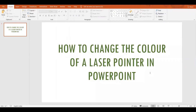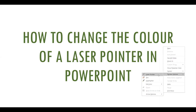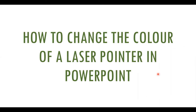Hello everyone. In one of our previous videos, we showed how you can simply operate a laser pointer in a PowerPoint presentation, along with the option of annotating using a pen or a highlighter. The link to the video will be given in the description box. As a quick revision, to activate your laser pointer you need to be in slideshow mode — right-click anywhere on the screen, go to pointer options, and activate the laser pointer.